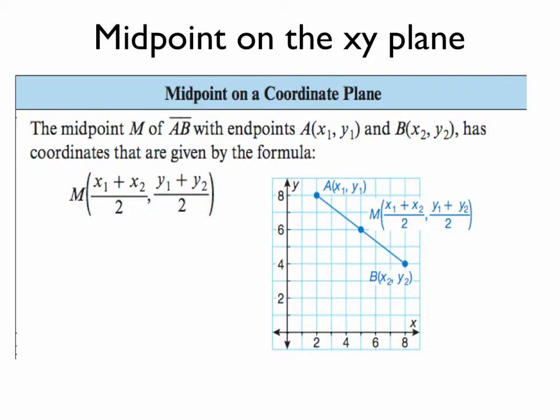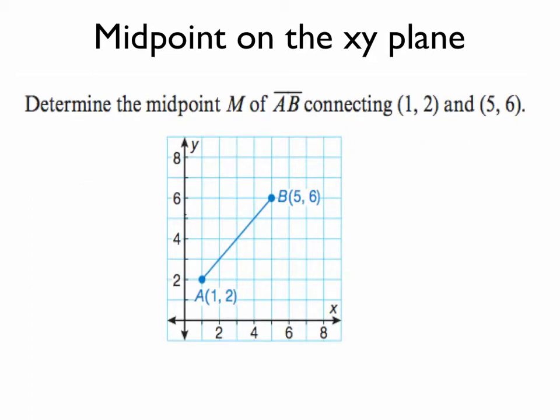Now on a coordinate plane, it's not much different, except we have an x and a y coordinate. So the midpoint is the average of the x coordinates, followed by the average of the y coordinates. So let's average our x coordinates. 1 plus 5 is 6. 6 divided by 2 is 3. Let's check to make sure our y coordinates have averaged correctly. 2 plus 6 is 8. 8 divided by 2 is 4.